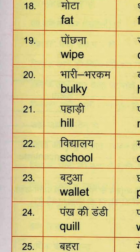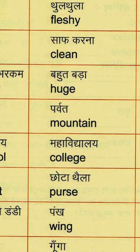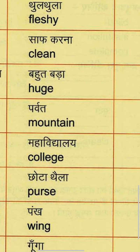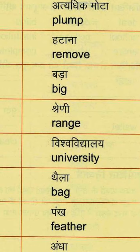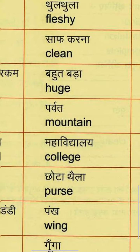Nineteenth group: Ponchna means Wipe — W-I-P-E. Saaf karna means Clean — C-L-E-A-N. And Hatana means Remove — R-E-M-O-V-E.